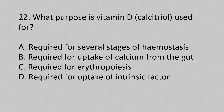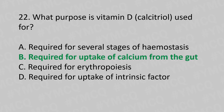Question 22: What purpose is vitamin D or calcitriol used for? Option A: required for several stages of hemostasis. Option B: required for uptake of calcium from the gut. Option C: required for erythropoiesis. Option D: required for uptake of intrinsic factor. The answer is Option B: required for uptake of calcium from the gut.